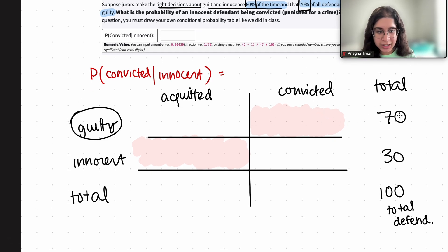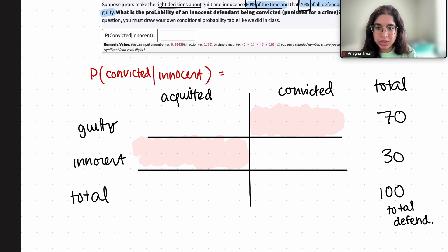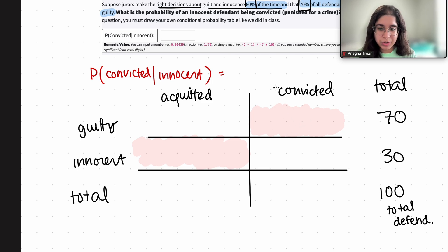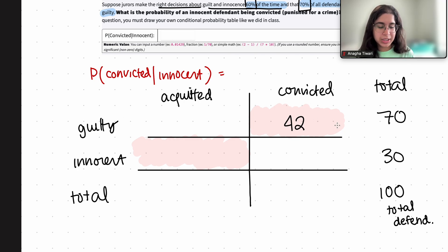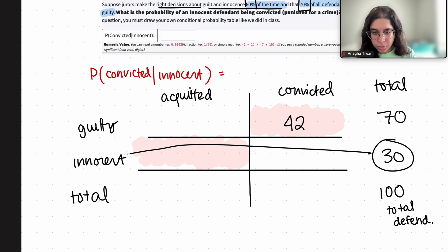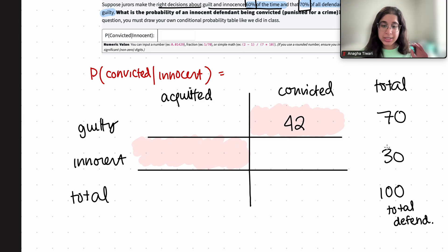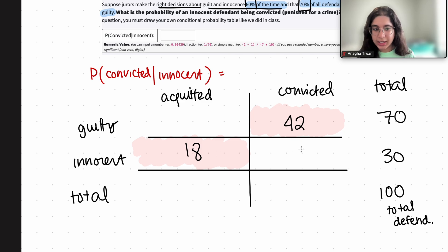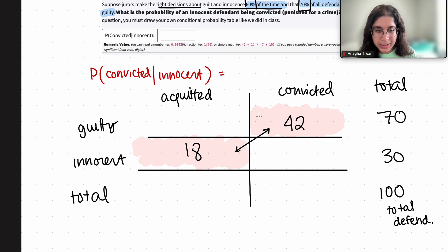So out of the 70 people who are guilty, 60% of them will correctly be convicted — that's 42, because 60% of 70 is 42. And out of the 30 people who are innocent, 60% will correctly be acquitted — that means 60% will correctly be set free — and that's 18. So 18 out of the 30 innocent people will experience a correct decision. These two cells represent the correct decisions, which happen 60% of the time.